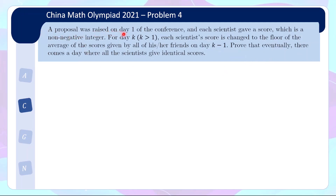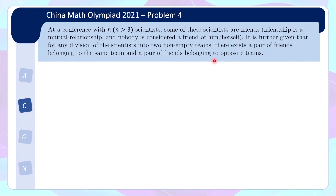A proposal was raised on day 1 of the conference and each scientist gave a score, which is a non-negative integer. For subsequent days, each scientist's score is changed to the floor of the average of the scores given by all of his or her friends on the previous day. We need to prove that eventually there comes a day where all the scientists give identical scores. Let's break down what this means part by part.